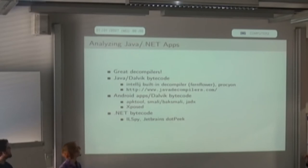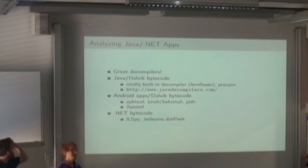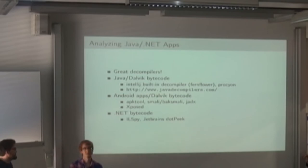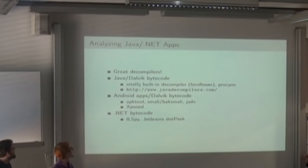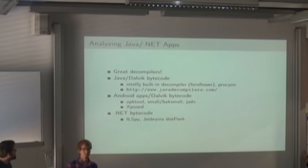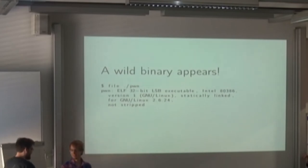Here we listed some tools we use. javadecompilers.com is like a decompiler as a service, useful when you don't want to install everything on your machine. There are also MaviTool and JetBrains tools for .NET, which we use and they work great. Sadly not everything here is open source — JetBrains is of course proprietary software. Now Michael is going to talk about the harder part of analyzing.